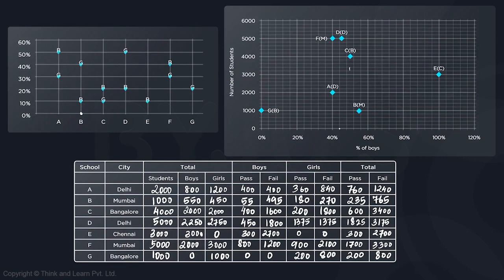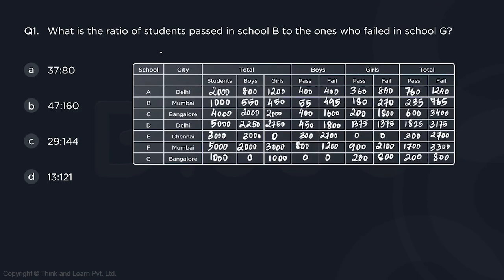Question 1: What is the ratio of students passed in school B to those who failed in school G? Students passed in school B is 235, and students failed in school G is 800. So 235 : 800 — both divisible by 5 — gives 47 : 160. Option B is the answer.